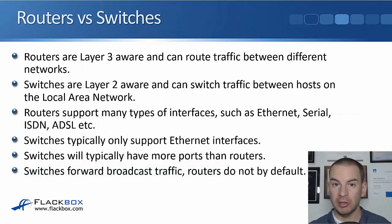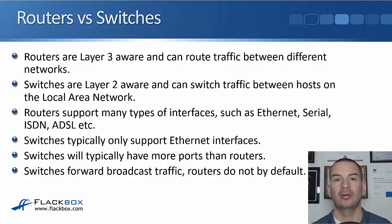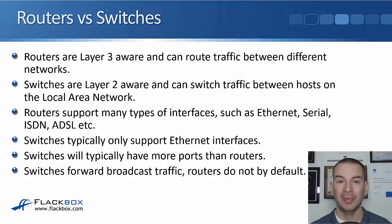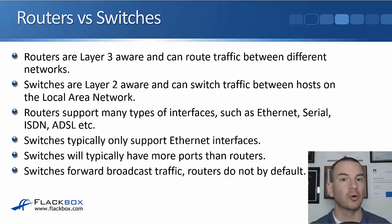To compare them with switches: routers are layer 3 aware and can route traffic between different networks, while switches are layer 2 aware — not layer 3 aware — and can switch traffic between hosts on the local area network. Routers support many different types of interfaces such as Ethernet, Serial, ISDN, and ADSL, whereas switches will typically only support Ethernet interfaces. Switches will typically have a lot more ports than routers, and switches forward broadcast traffic while routers don't forward broadcast traffic by default.